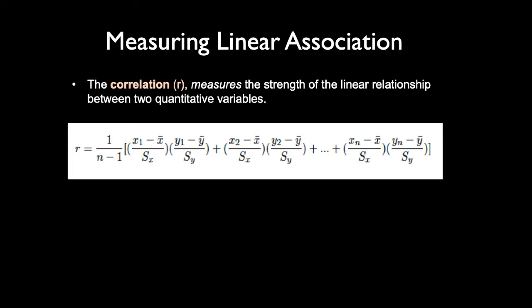In this formula, x1, x2, ..., xn are the data values of x, and y1, y2, ..., yn are the values of y. x-bar is the average of x, y-bar is the average of y, sx is the standard deviation of the x data, and sy is the standard deviation of the y data.